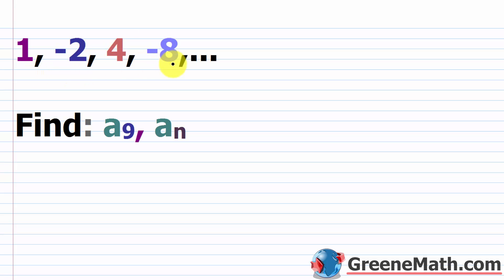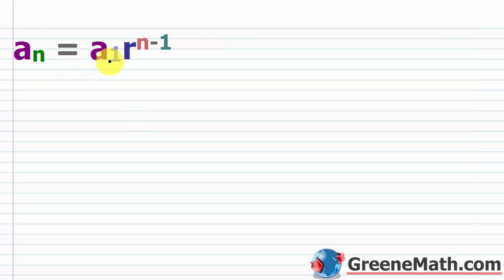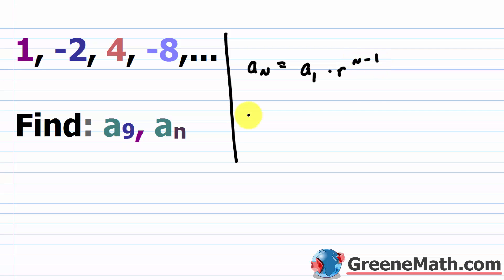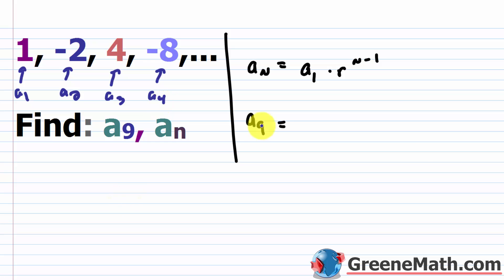We're given a list of terms and we want to find a sub 9 and a sub n. This is the formula for the general term. So a sub n equals a sub 1 times R raised to the power of n minus 1. We have a sub 1, a sub 2, a sub 3, and a sub 4 from the sequence, and we know a sub 1 is 1.